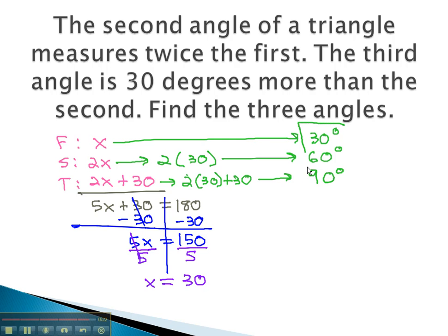The triangle described is a 30-60-90 triangle, where the second angle is twice the first, and the third angle is 30 degrees more than the second. By clearly labeling and identifying our three angles, and knowing they add to 180, we can quickly solve a triangle problem.